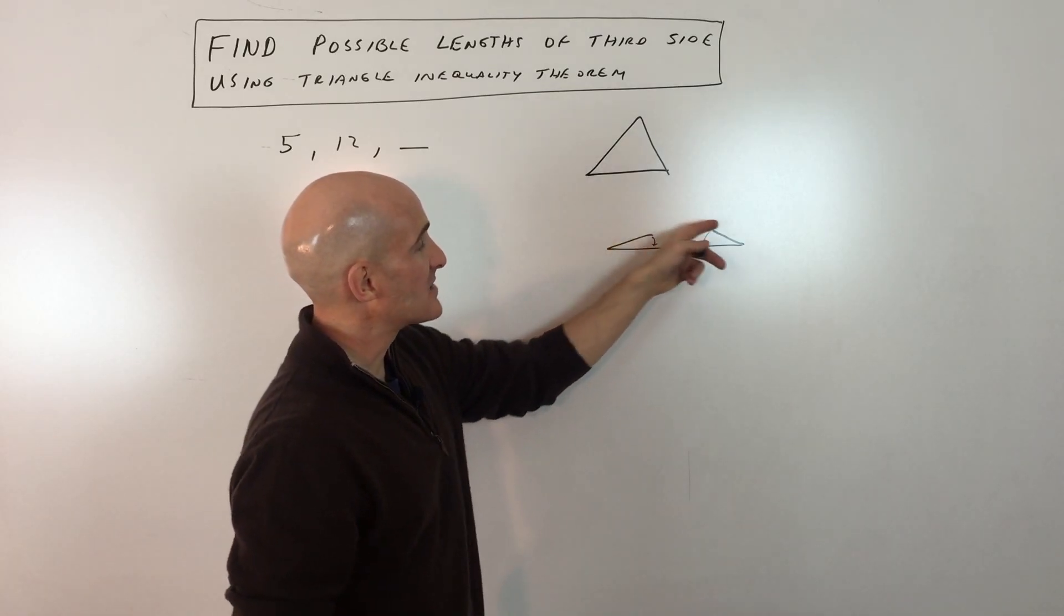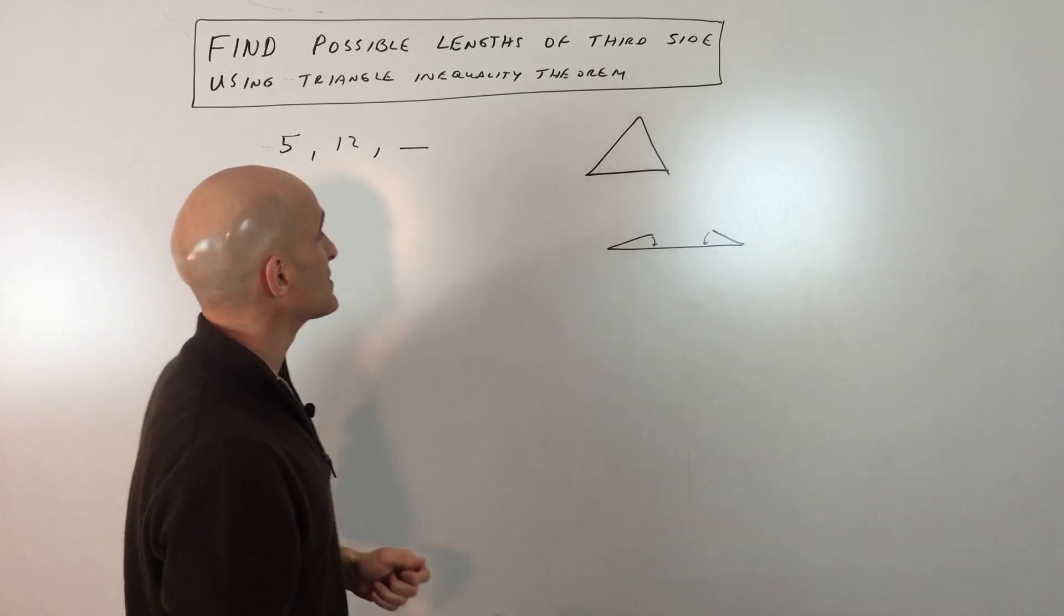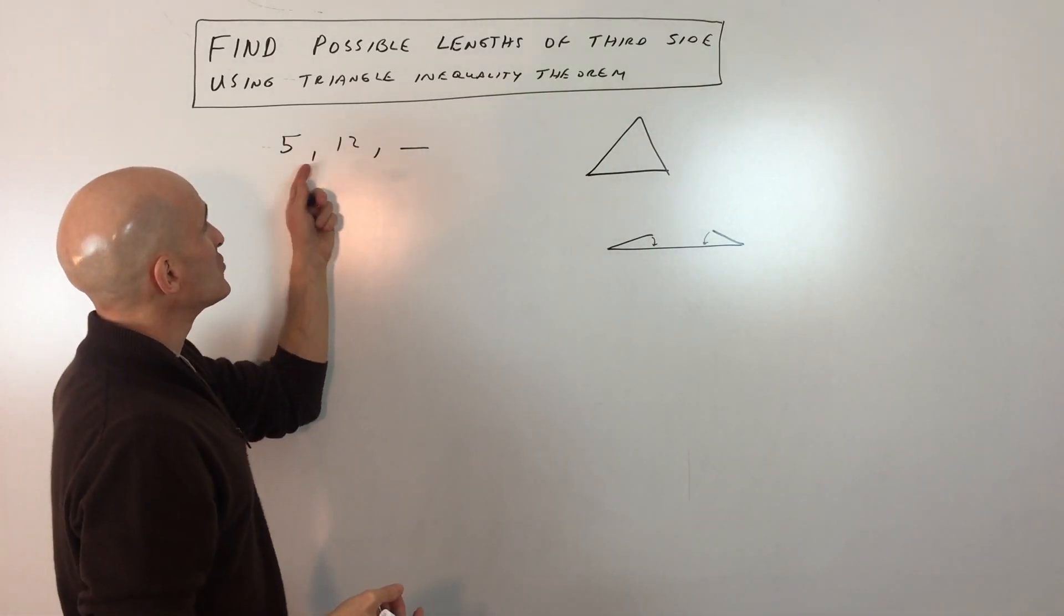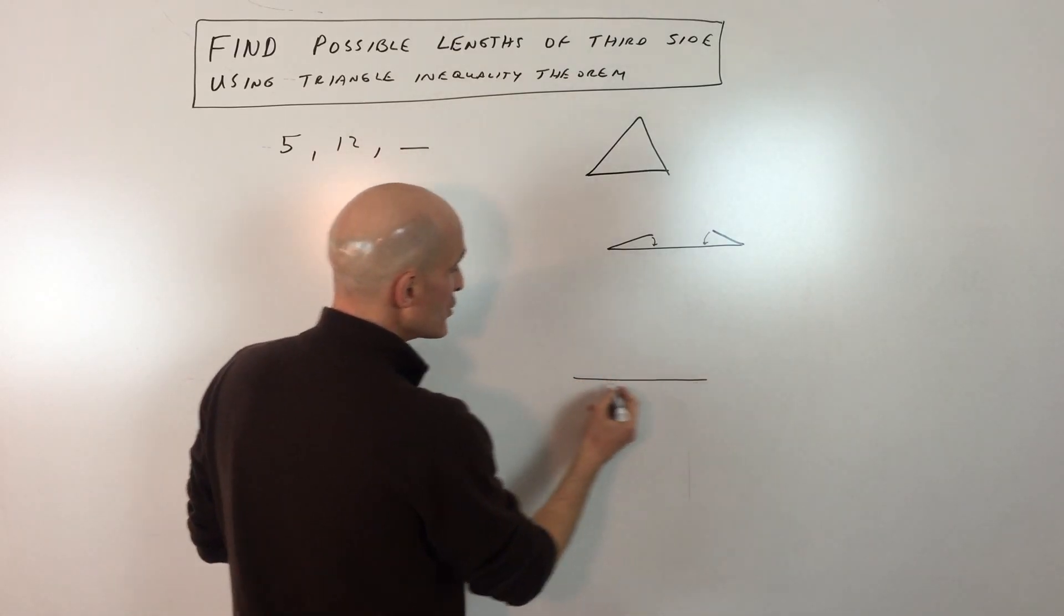So any two sides added together have to be more than the third side. That's something that we're paying attention to in this example. Now, when we have these two sides, 5 and 12, let's see if we can just sketch it out to give us a visual way of appreciating this.